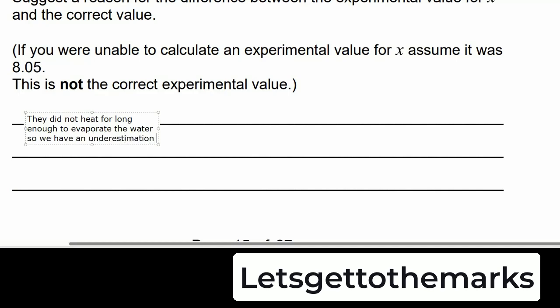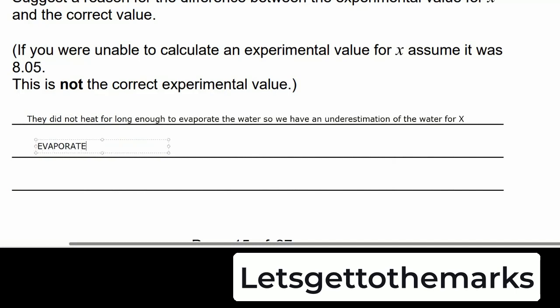The answer to this one is they didn't heat the water for long enough to evaporate the water. So we have an underestimation of the value for x. Evaporating water is also known as driving the water off, like driving it off from the solid. Really, this is a one marker. They just didn't heat for long enough.